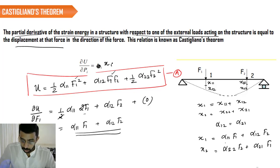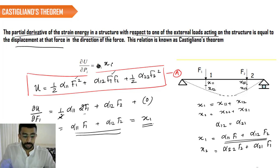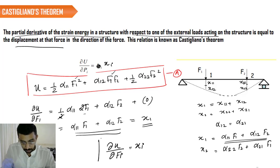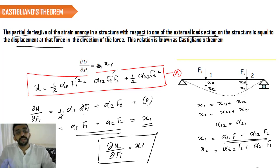If you look at this equation and this equation, we can say that which is equal to X1. So we have validated that dU by dFi is nothing but Xi. This is Castigliano's theorem where the differential of strain energy with respect to a load is going to give you the deflection at that particular location.